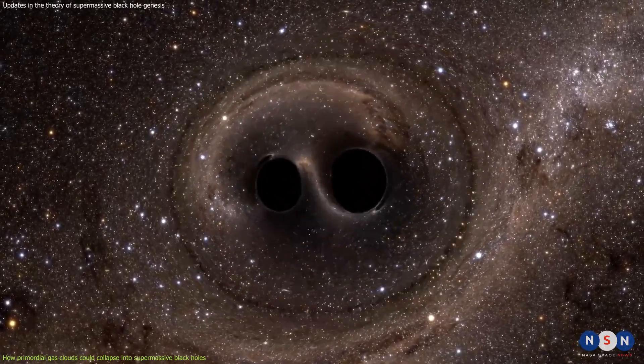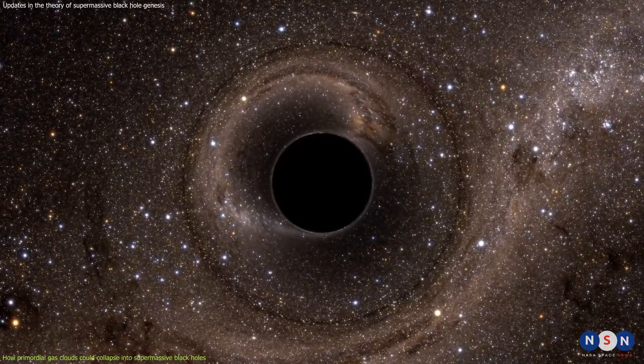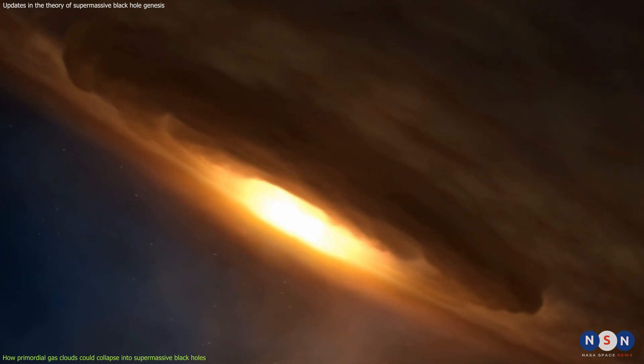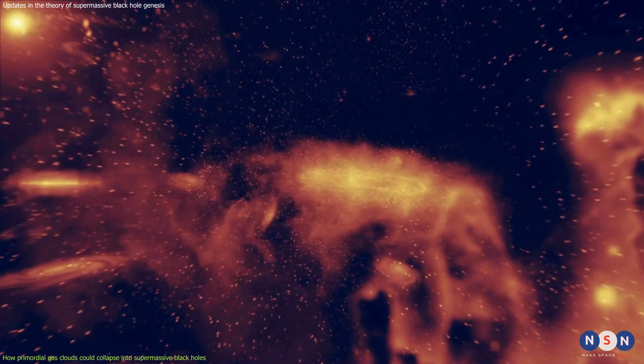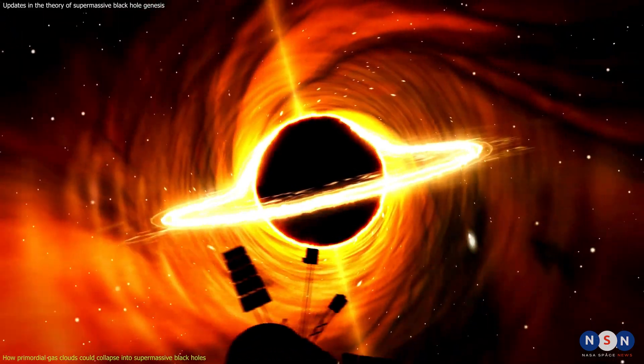These clumps would then continue to collapse and form supermassive black holes with masses of up to 10 million times that of our sun in a matter of a few million years. This process would bypass the usual steps of star formation and stellar black hole formation, which are much slower and less efficient.